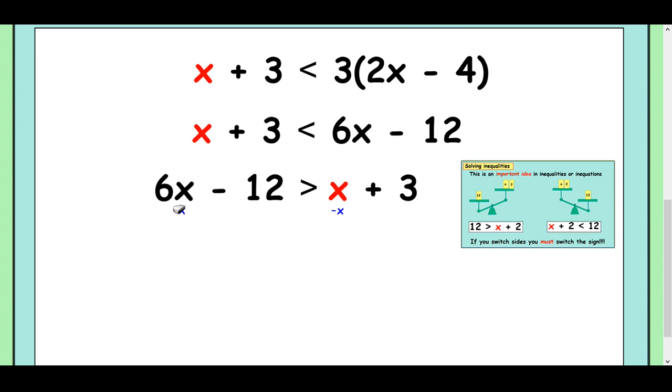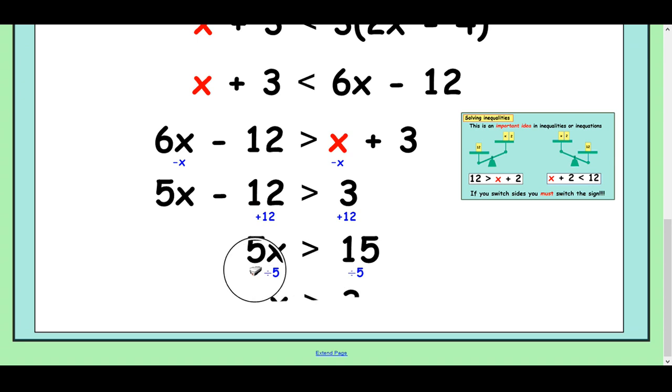Okay, I can then go about the technique I did at the top. So, I'm going to take away the x from both sides. That leaves me with 5x take away 12 is greater than 3. Add the 12 to both sides. 5x is greater than 15 and divide by 5 to finish. x is greater than 3.